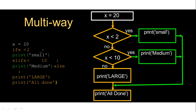Multi-way decision with if statement: x equals 20. If x less than 2 — no, 20 is not less than 2. Elif x less than 10 — also no. Else: print 'large', because the value is greater than both 2 and 10. 'All done' will also be printed. You can write any message with the print statement.